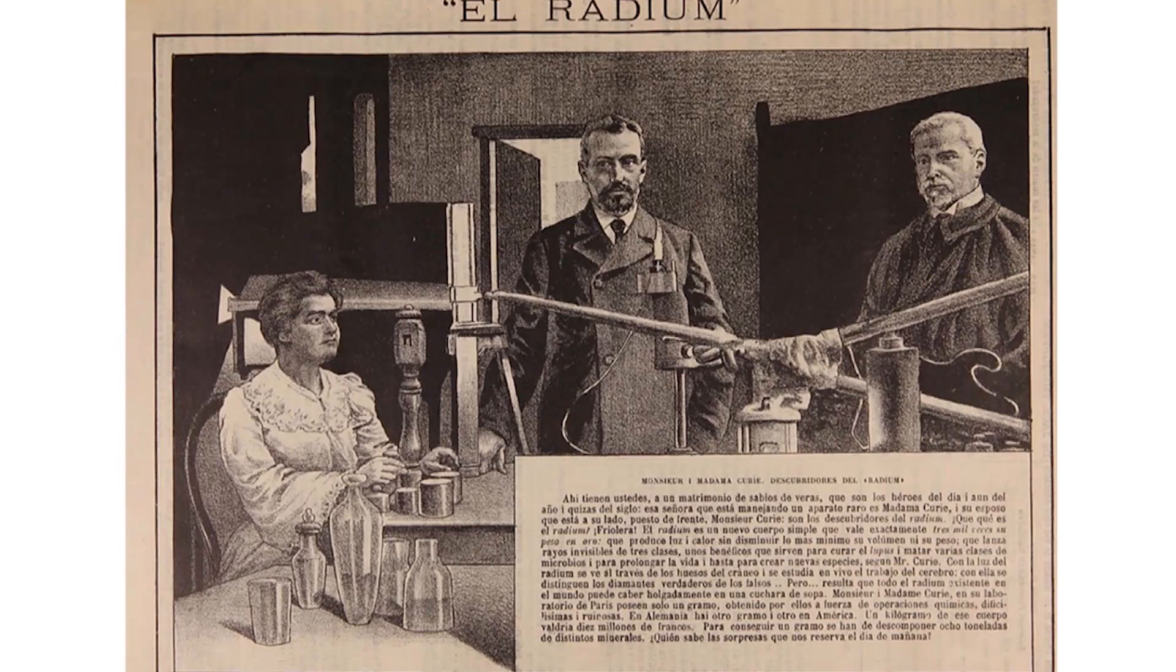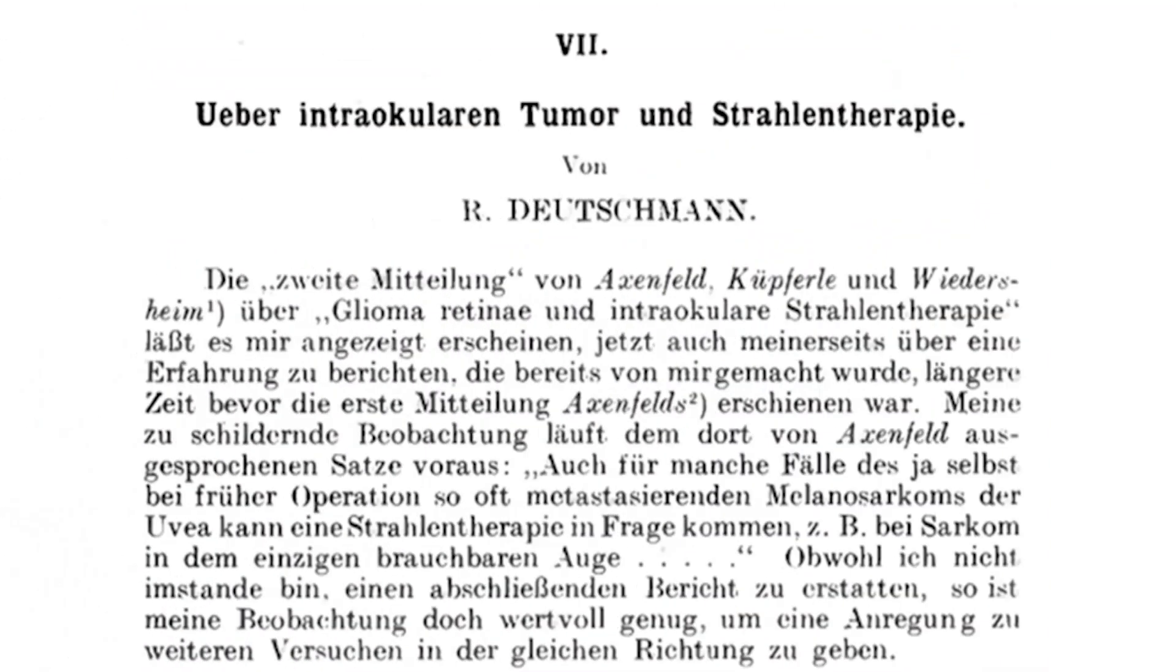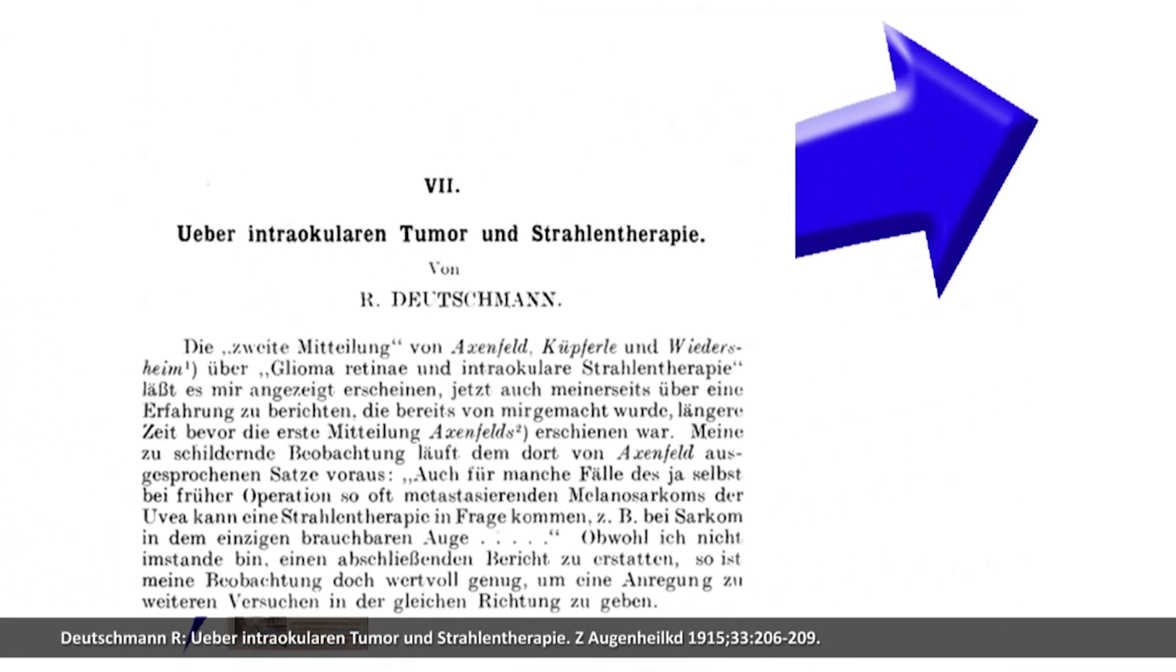Radium, discovered in 1898, was the first isotope used in brachytherapy. Dushman in 1915 was the first to implant radium capsules in fraction doses.